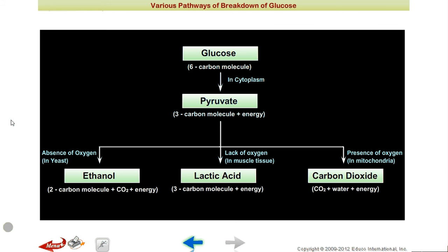If there is no oxygen, then ethanol is formed. In muscle tissue with lack of oxygen, lactic acid forms and less energy is produced. In both these cases, there will be less energy. However, if there is a lot of oxygen available, pyruvate breaks down completely and you get carbon dioxide, water, and energy.